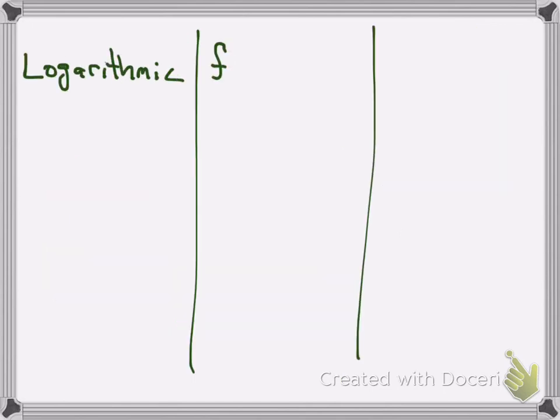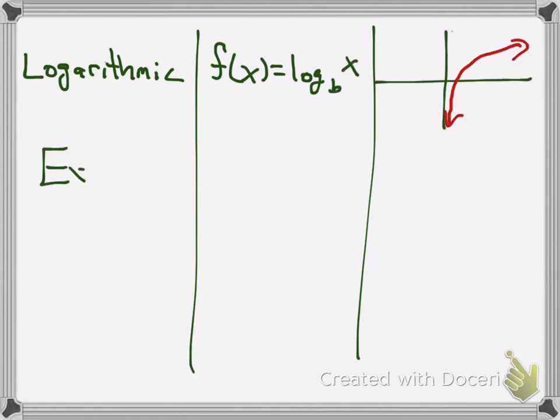Last three. Oh my gosh, am I at the last three? Logarithmic. Log b of x. Notice how that one's similar to the square root function, but it keeps going past the x-axis and extends. And it's also not quite reaching a spot.